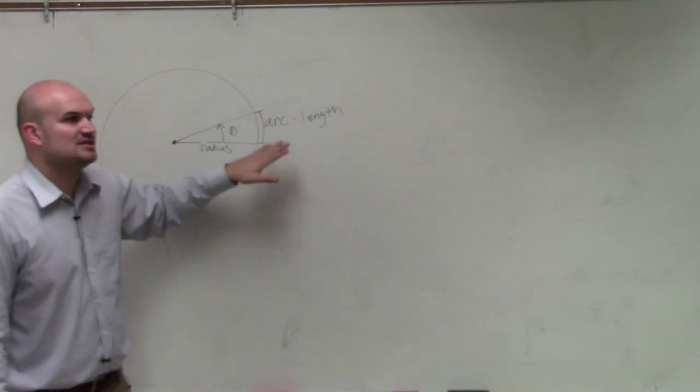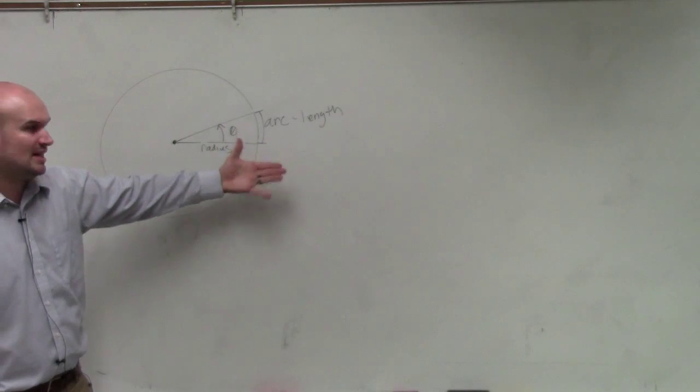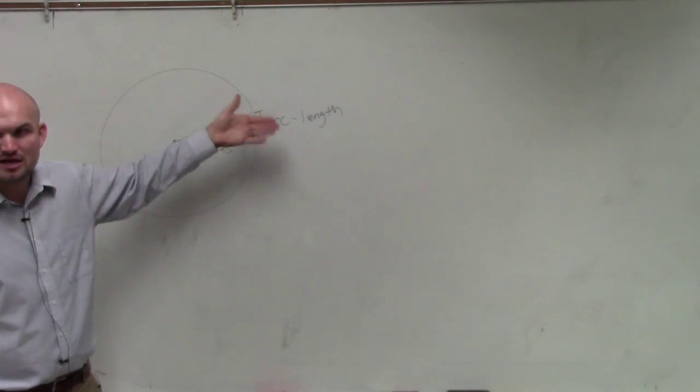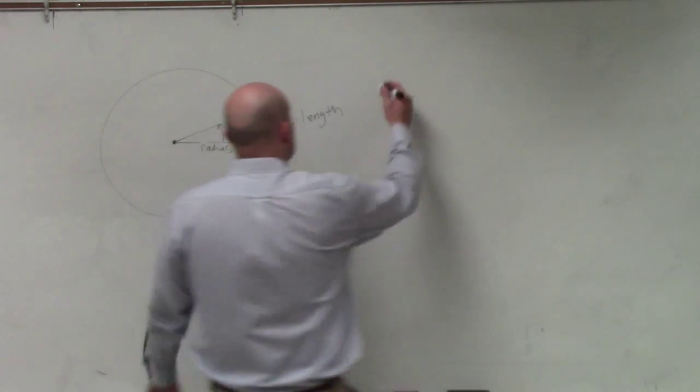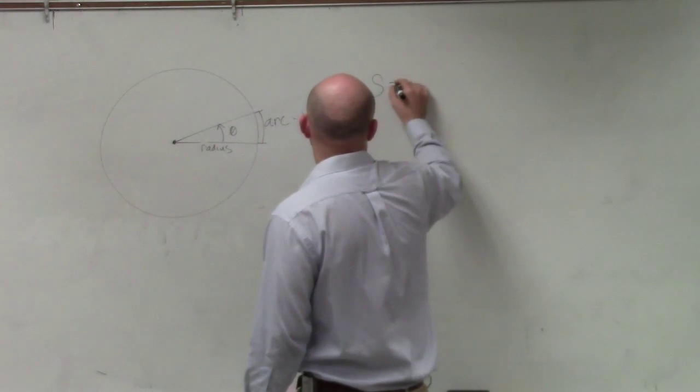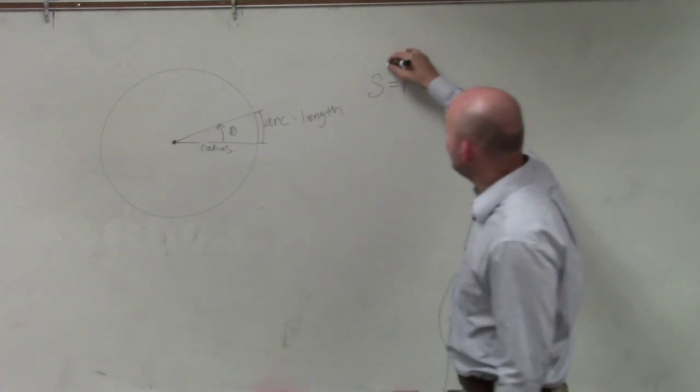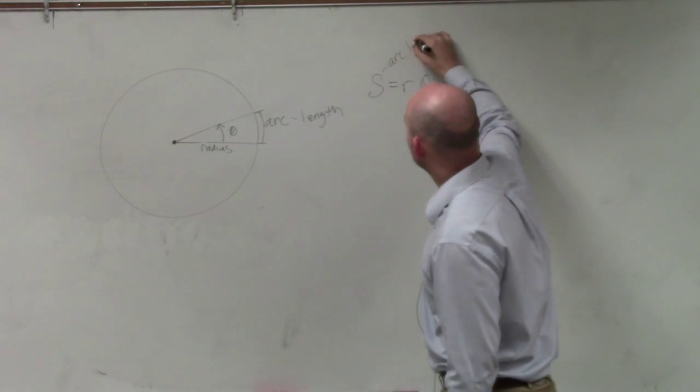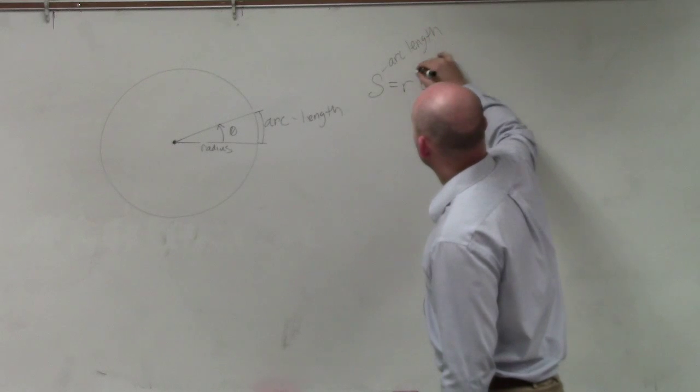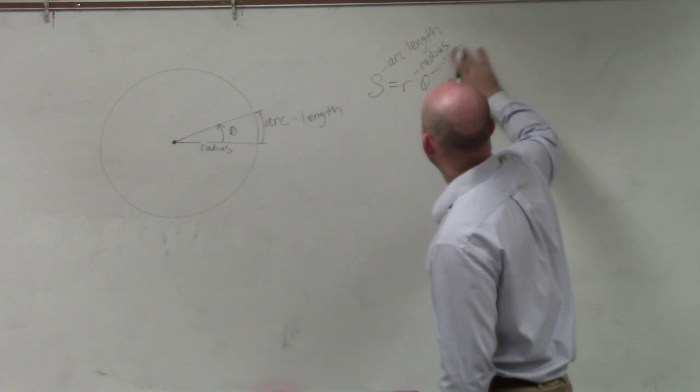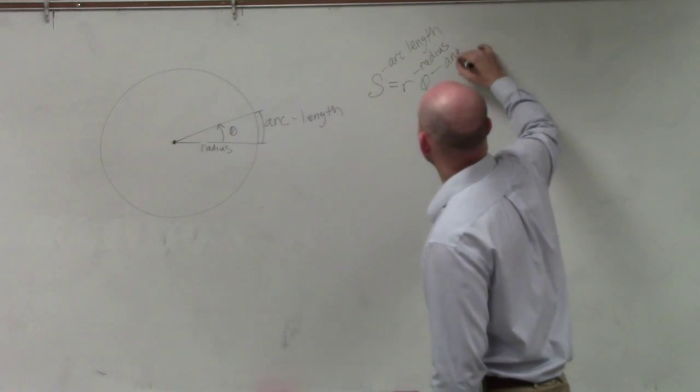But there is a formula for us to be able to find arc length, or at least a relationship between the arc length, radius, and theta, because we kind of talked about that as far as in your radian. Well, that relationship is s equals r times theta, where s is the arc length, r is the radius, and theta is our angle.